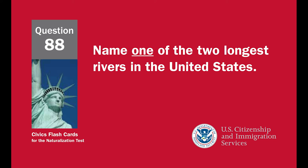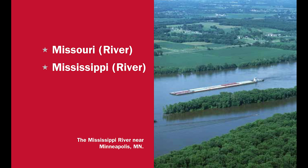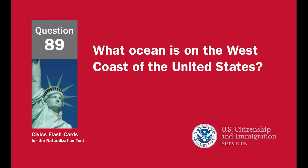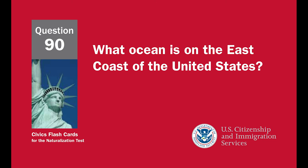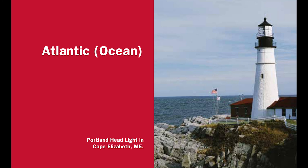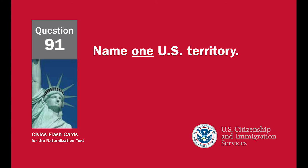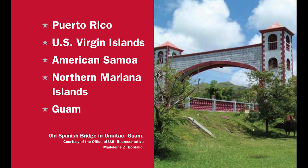Name one of the two longest rivers in the United States. The Missouri River or the Mississippi River. What ocean is on the west coast of the United States? The Pacific Ocean. What ocean is on the east coast of the United States? The Atlantic Ocean. Name one U.S. territory. Puerto Rico, U.S. Virgin Islands, American Samoa, Northern Mariana Islands, or Guam.